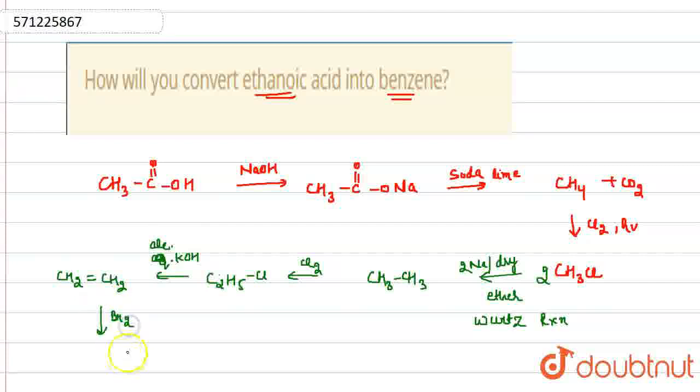Then addition of bromine occurs. This bromine will add on both sides of carbon. Now again we did dehydrohalogenation reaction.